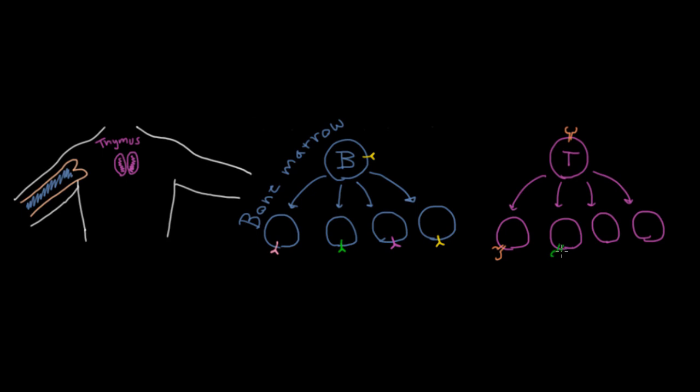And we remember that these receptors actually bind antigens, so pieces of those criminals that are presented to them by antigen-presenting cells, and we'll revisit that in a second. So all this is occurring in the thymus.